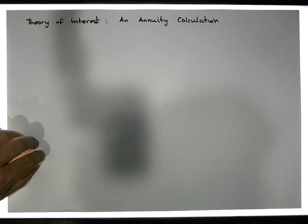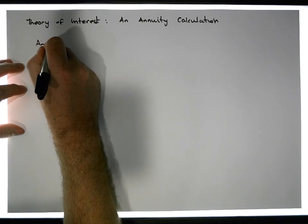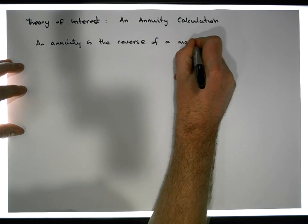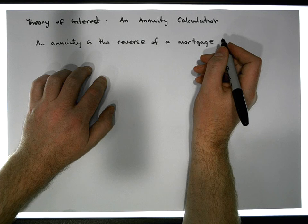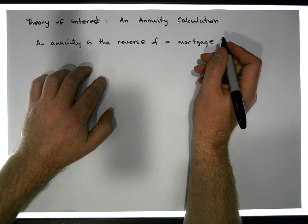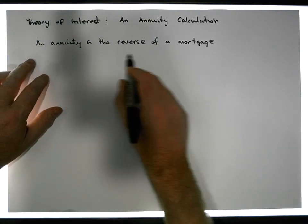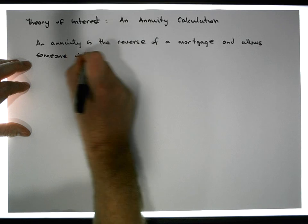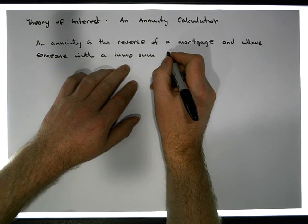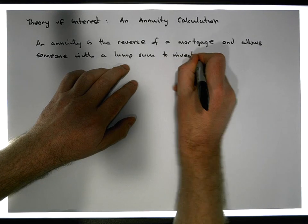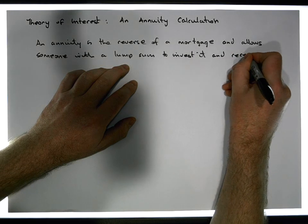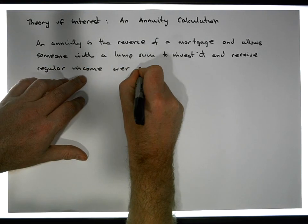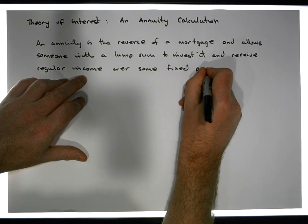Let's keep in mind that an annuity is basically the reverse of a mortgage. An annuity is the reverse of a mortgage, and it allows someone with a lump sum to invest it and receive regular income over some fixed period of time.